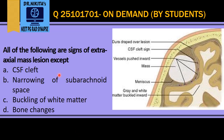In this question, we have been asked about the signs of extraaxial mass lesion. First, intraaxial mass lesion is the one which arises in the brain parenchyma, and extraaxial is the one which arises outside the brain parenchyma. So this is an extraaxial mass because it is outside the brain parenchyma. Let us see the signs of extraaxial mass.